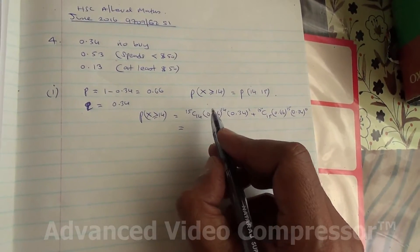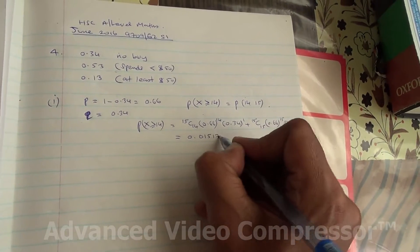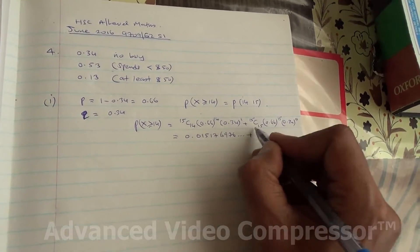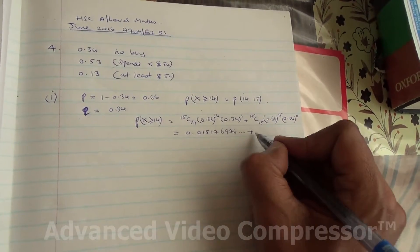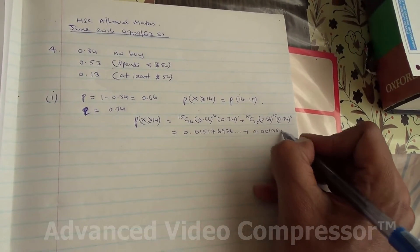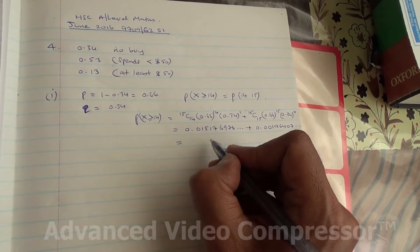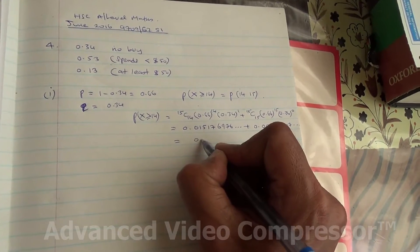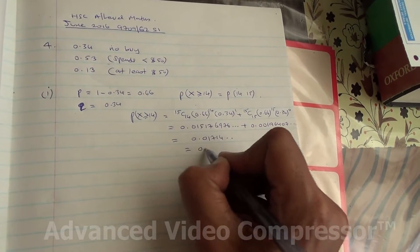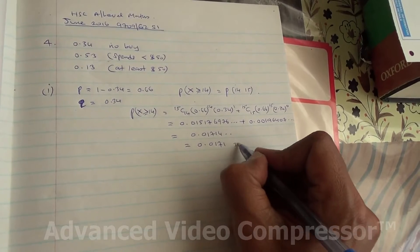Now, if you were to work this out in your calculator, you are going to end up with 0.015176976 something. Plus, this one here is going to be 0.00196407 and so on. And if you were to add these probabilities, you are going to end up with 0.01714 and so on.